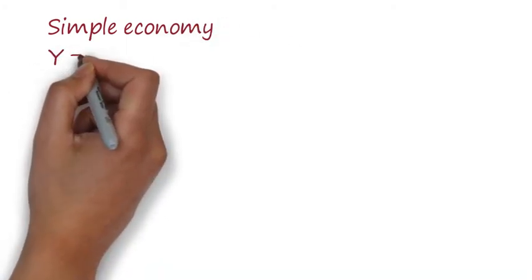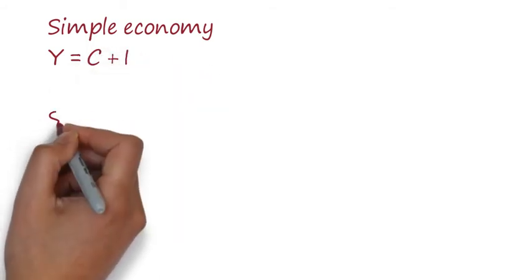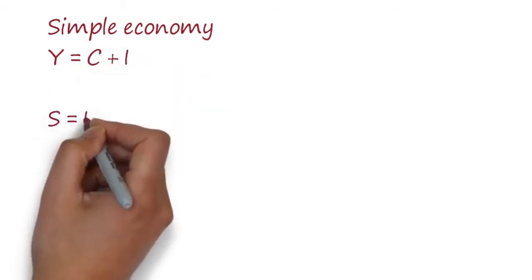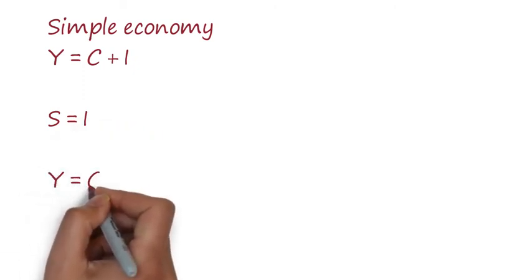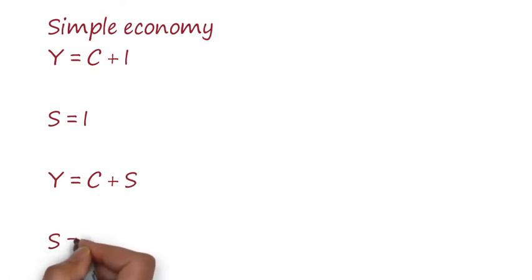If you already have a consumption function, you can build up a saving function by using that function. Y = C + S, then S = Y - C, which means the level of saving can be identified by subtracting C from Y.